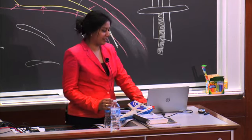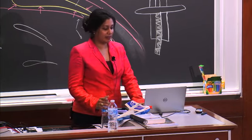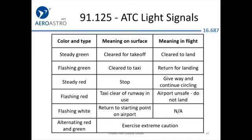There are light signals for when your radio dies and you need to communicate with the tower. They have a light gun and can communicate information to you via these signals. They're great candidates for FAA exam questions but unlikely to be used in reality — people don't usually commit them to memory, and many pilots keep this in the back of their checklist because it's so rare.